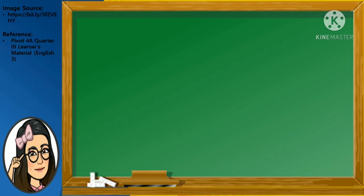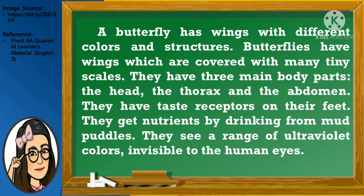And for my last challenge to you, once again, I'm going to read a short selection and then you identify what details are asked. A butterfly has wings with different colors and structures. Butterflies have wings which are covered with many tiny scales. They have three main body parts: the head, the thorax, and the abdomen. They have taste receptors on their feet. They get nutrients by drinking from mud puddles. They see a range of ultraviolet colors invisible to the human eyes.